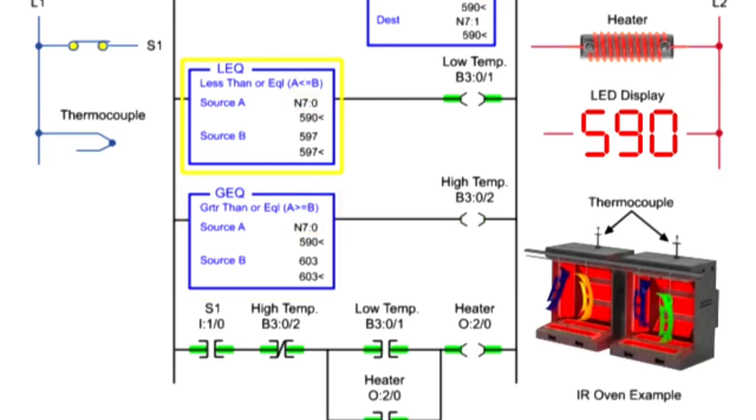With source A less than source B of the less than or equal to instruction, the low temp and heater outputs are enabled. The heater remains on as long as the low temp output is true and the high temp output is false.